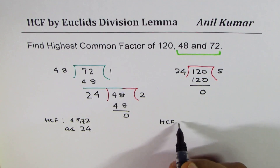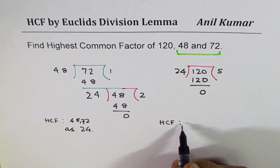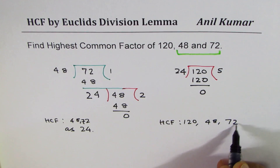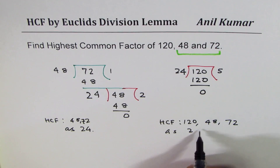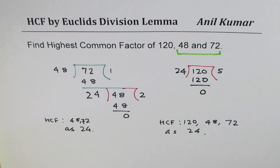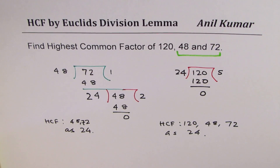Therefore, the highest common factor between 120, 48, and 72 is 24. With the help of this method, in just a couple of steps we can find the highest common factor. It's a very effective method, and I hope you understand and appreciate it. Feel free to post questions, and thanks for watching.